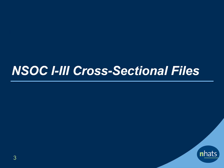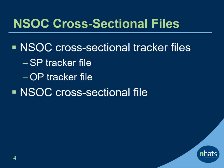Let's start with information about NSOC 1 through 3 cross-sectional files, which include information about current caregivers. Each round, the NSOC cross-sectional data are organized into 3 files: 2 tracker files — one for SPs or sample persons, and the other for OPs or other persons — and the cross-sectional NSOC file. Let's review each of these files in more detail.